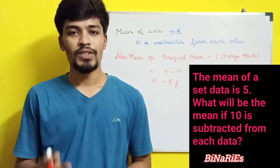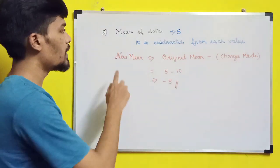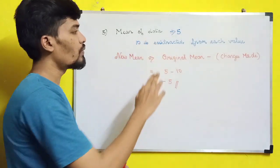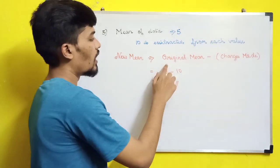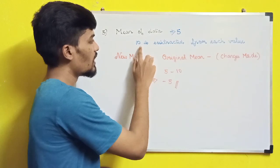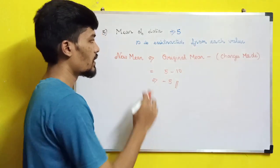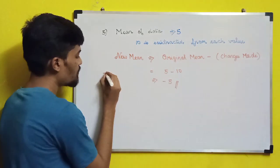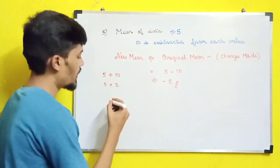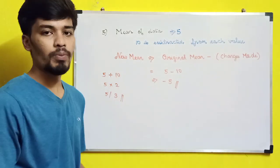The next question: the mean of a set of data is 5. What will be the mean if 10 is subtracted from each data value? There is a property: if any change is made to each value in the data, the resultant mean changes by the same amount. So new mean = original mean − change = 5 − 10 = −5. Similarly, if 10 were added it would be 5 + 10 = 15; if multiplied by 2, it would be 5 × 2 = 10; if divided by 3, it would be 5/3.